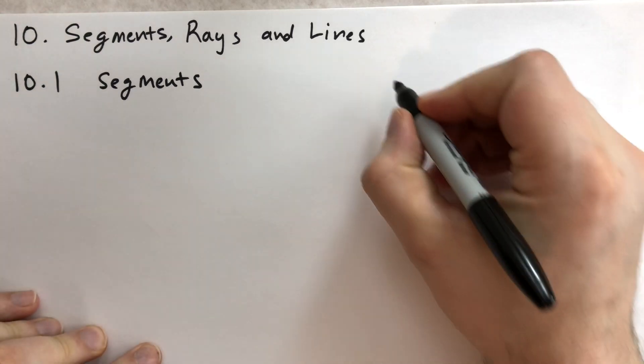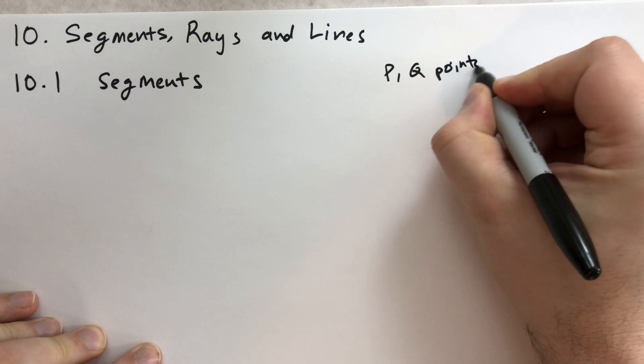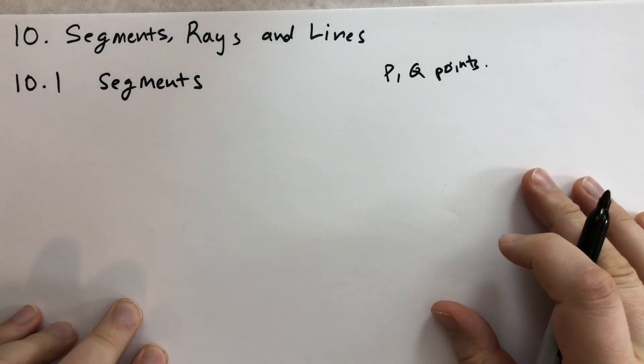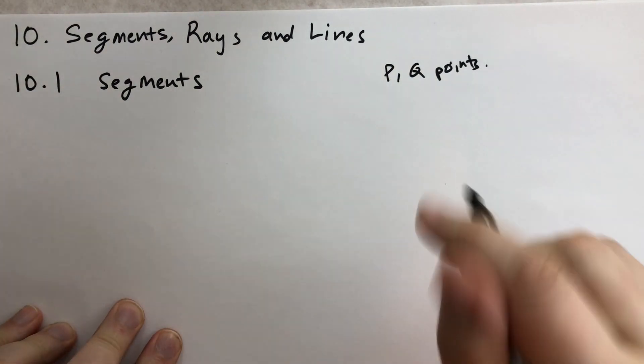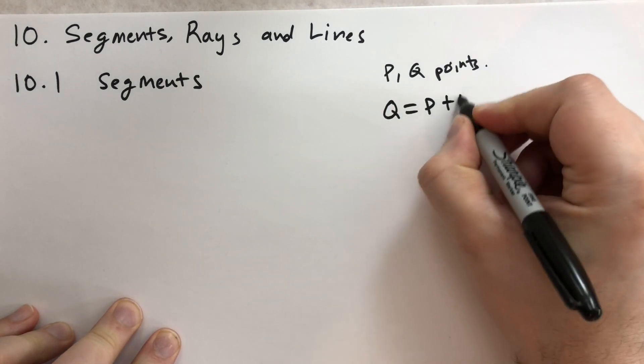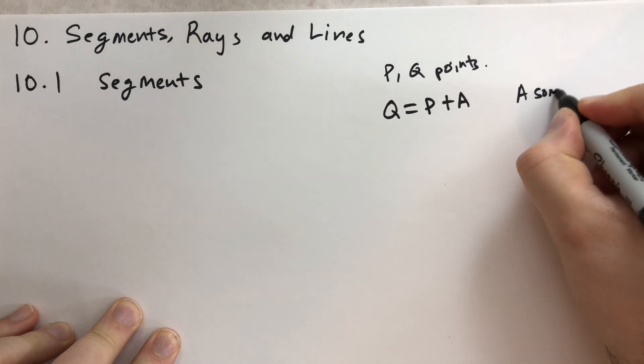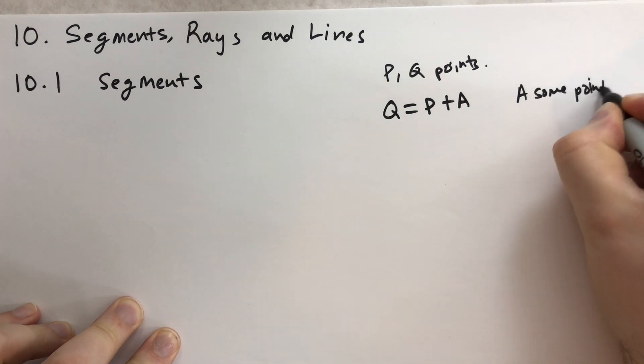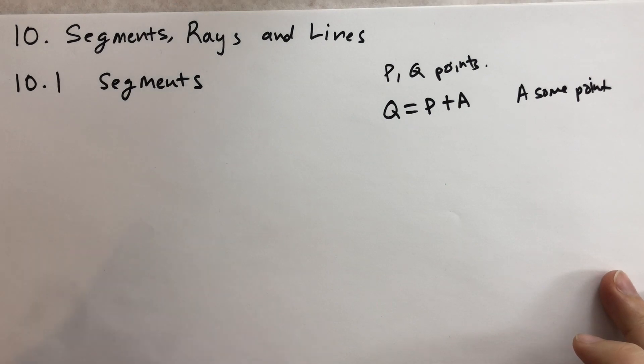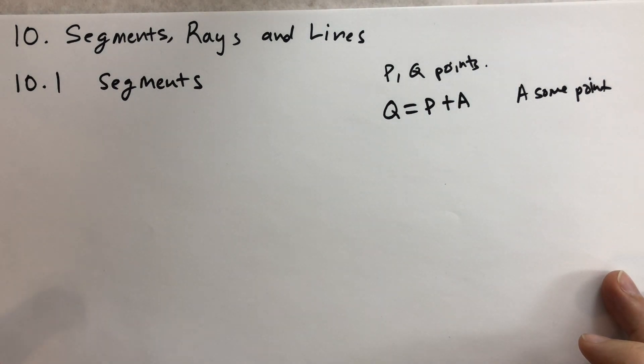What's a line segment? Let P and Q be points in the plane. We're dealing in R2. We can write Q equals P plus A for some A. So A is some point. There is some point that we can add to P. Remember from the last section, we talked about how to add points, how that's vector addition.